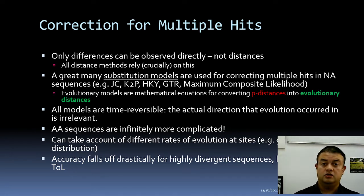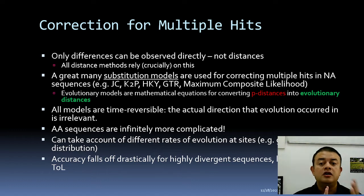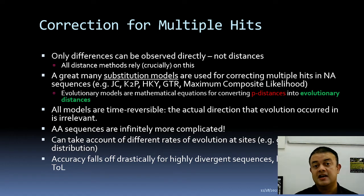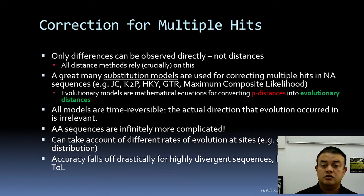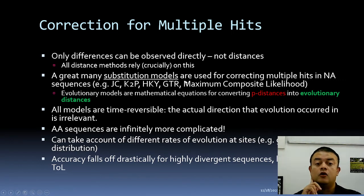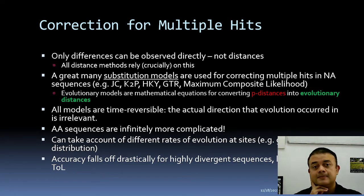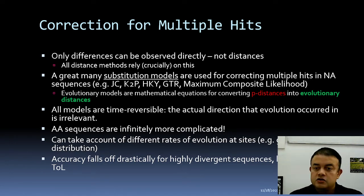Observed distance is what we can count directly — the number of base pair differences — but the actual evolutionary distance requires a probabilistic mathematical model to calculate. Many substitution models correct for multiple hits in nucleotide sequences: Jukes-Cantor, Kimura two-parameter, Hasegawa-Kishino-Yano (HKY), Generalized Time Reversible (GTR), and Maximum Composite Likelihood. These are all mathematical formulas to convert p-distance into the actual evolutionary distance using probabilistic approximations.